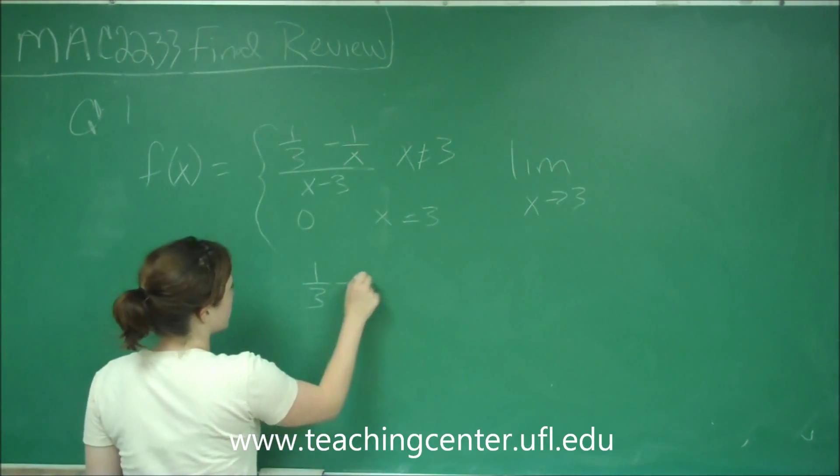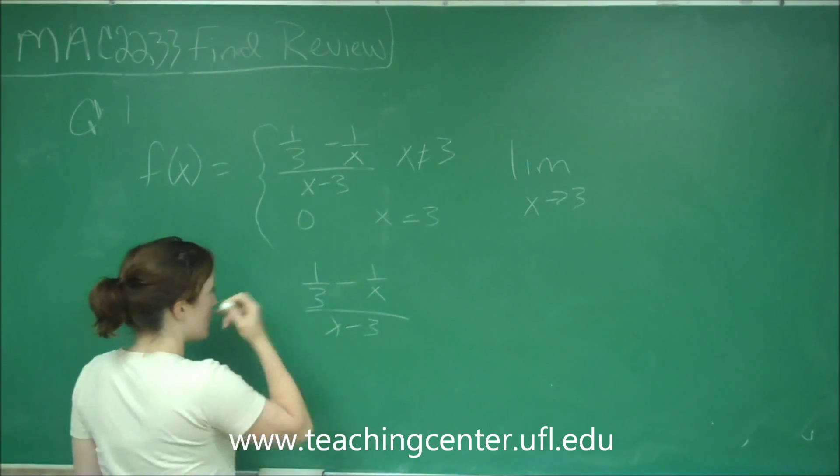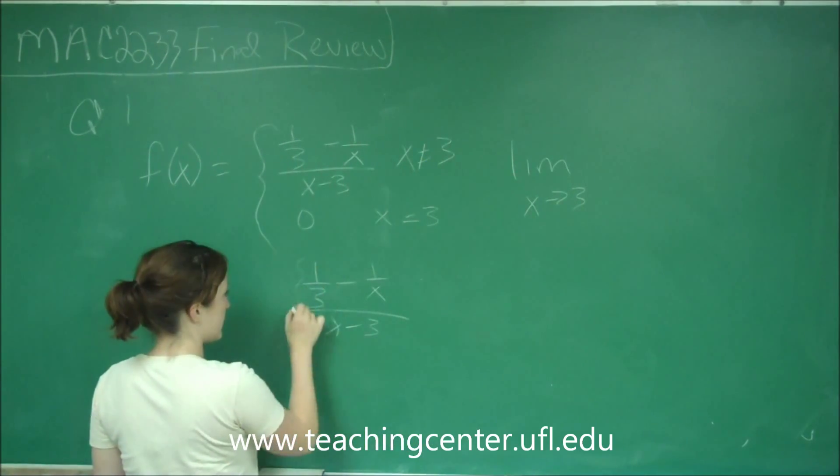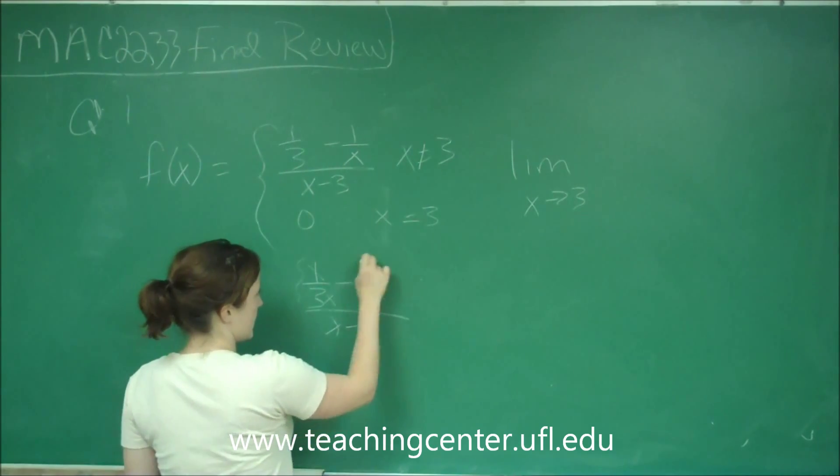So we have 1 third minus 1 over x all over x minus 3. And so I find the common denominator on the top function here of 3x. So I have to multiply this by x and this by 3.